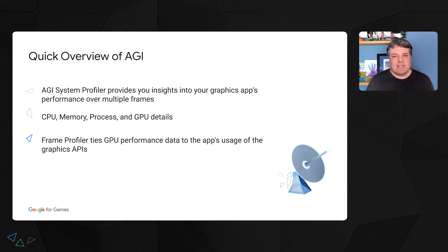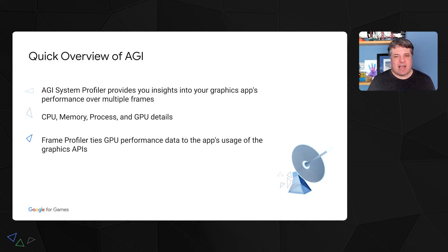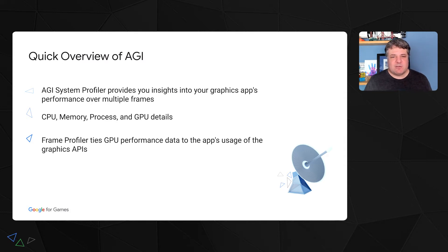However, it can often be hard to act on this information. Say that, with the System Profiler's help, you've identified that the app is GPU-bound and even determined that it's using too much vertex bandwidth. It's still hard to find where to make changes in the app to address the problem. Which render pass needs improving? Which draw calls are blowing the vertex budget? Where do all these texture reads come from? These are questions the System Profiler cannot answer.